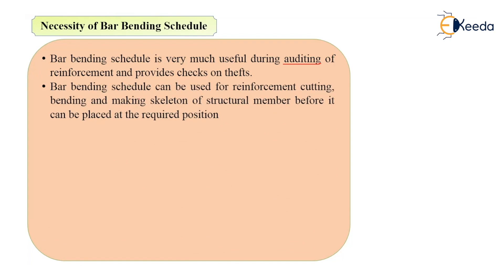Bar bending schedule can be used for reinforcement cutting, bending, and making the skeleton of structural members before they are placed at the required position. You can prepare the skeleton of a particular structural element before placing it into the formwork. At the construction site, laborers first prepare the skeleton — for example, the skeleton of a beam: they provide stirrups, join the anchor bars, bind it with binding wire, and then provide the full skeleton, which is then placed into the formwork before concreting. It is all done as per the bar bending schedule.